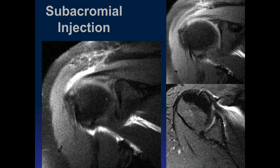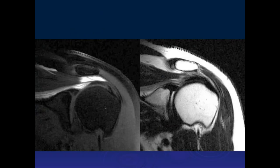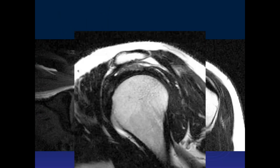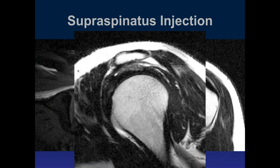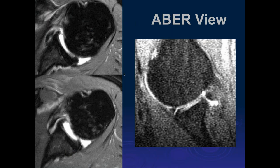Here's someone who had an arthrogram injection where they accidentally did a subacromial injection instead of into the joint space — contrast is in the wrong location. This was actually injected into the supraspinatus tendon and the subacromial subdeltoid bursa. That's one complication of arthrographic injections.